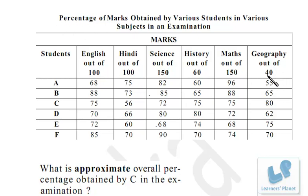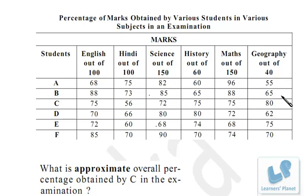For example, in geography out of 40, the marks are given as percentages — so student A is getting 55%, B is getting 65%, C is getting 80%, and so on. Now let's go to the questions one by one.